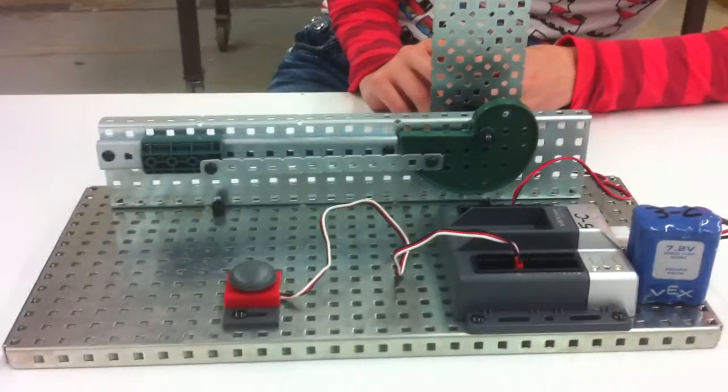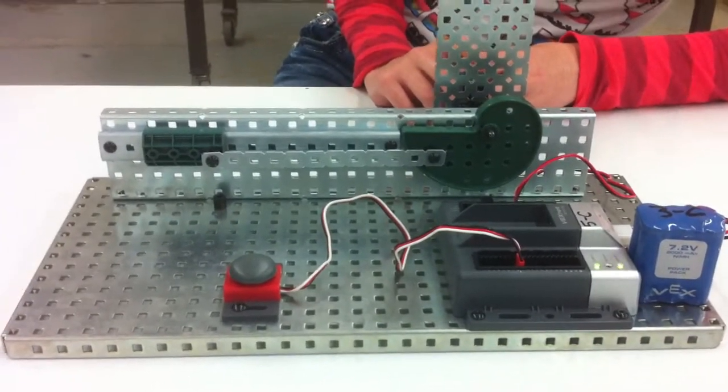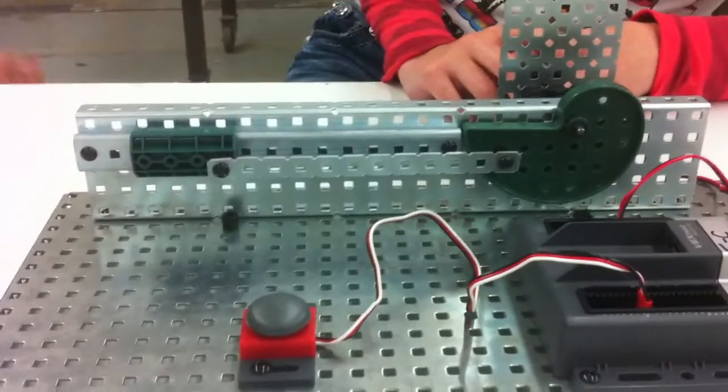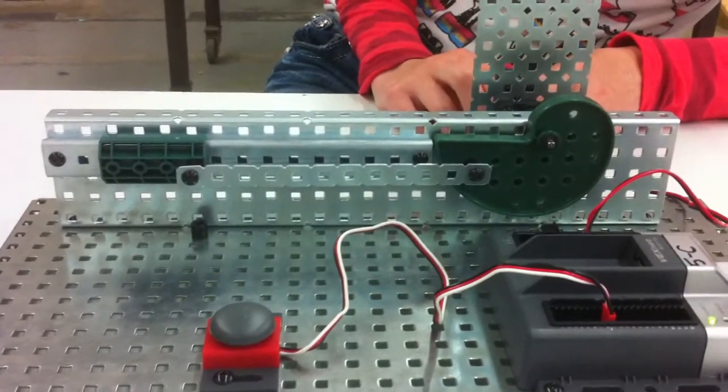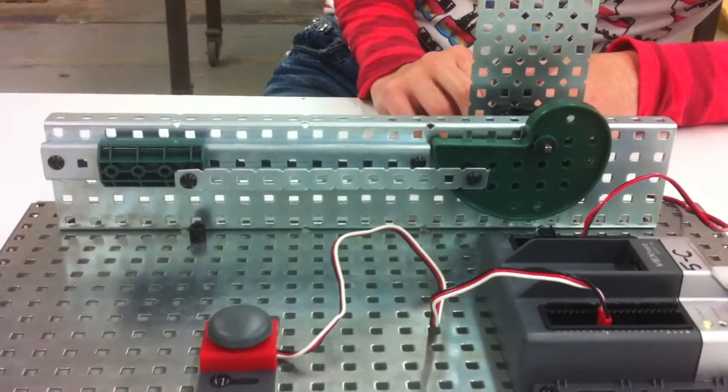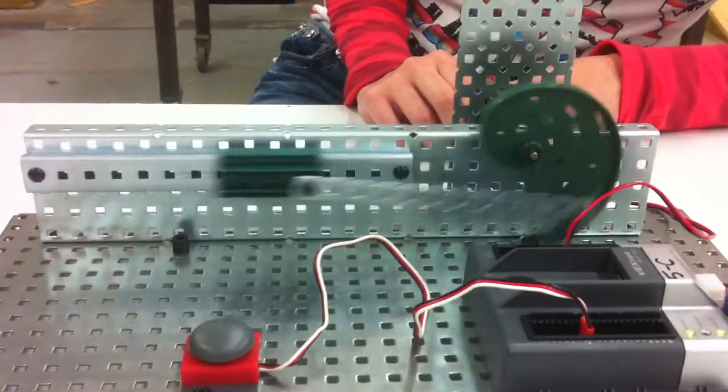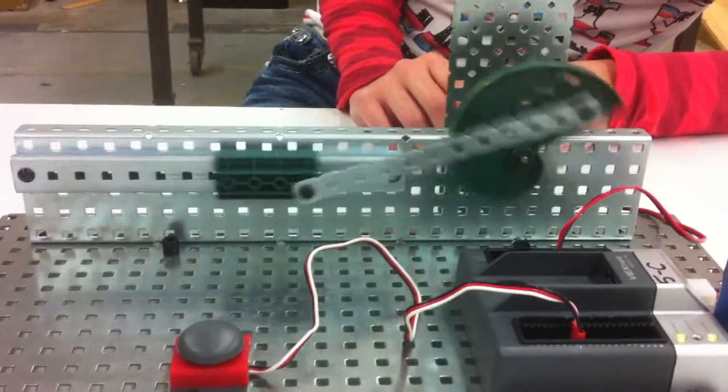Go! This is our crank and slider assembly. It's a rotary. The input on this is a rotary. The output is reciprocating.